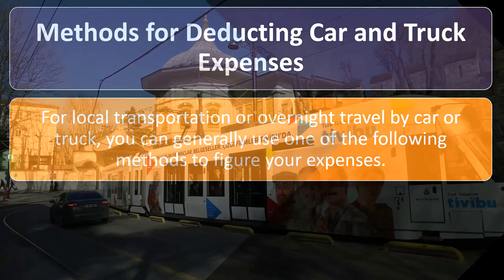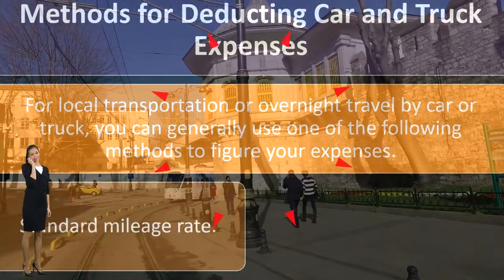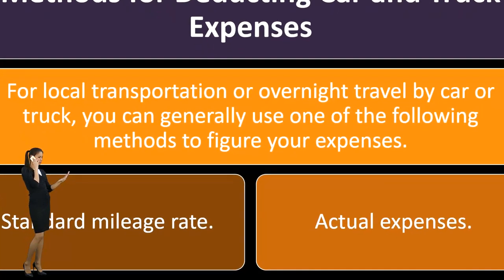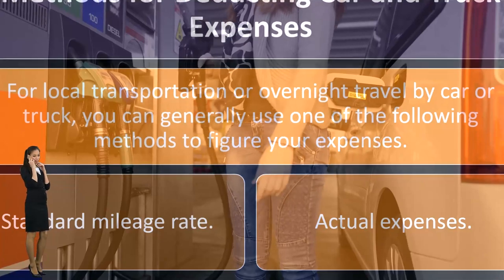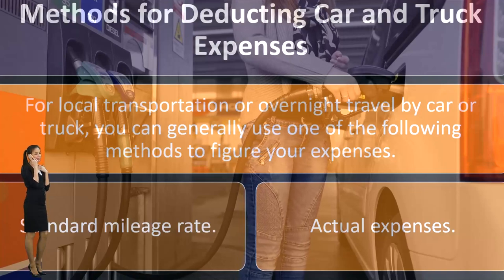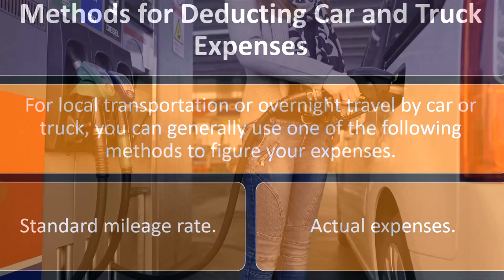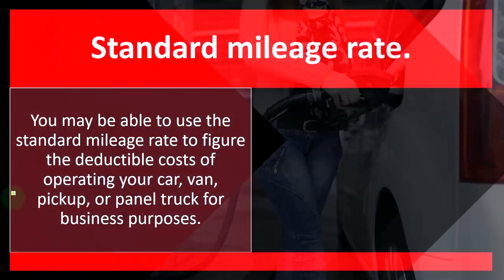For local transportation or overnight travel by car or truck, you can generally use one of the following methods to figure your expenses: the standard mileage rate, or actual expenses. With actual expenses, there are complications in parsing business versus personal costs such as gas. The standard mileage rate is easier but still requires tracking your mileage. There is also the question of which method is most beneficial — not just in the first year, but in future years as the business continues and you use your automobile within it.